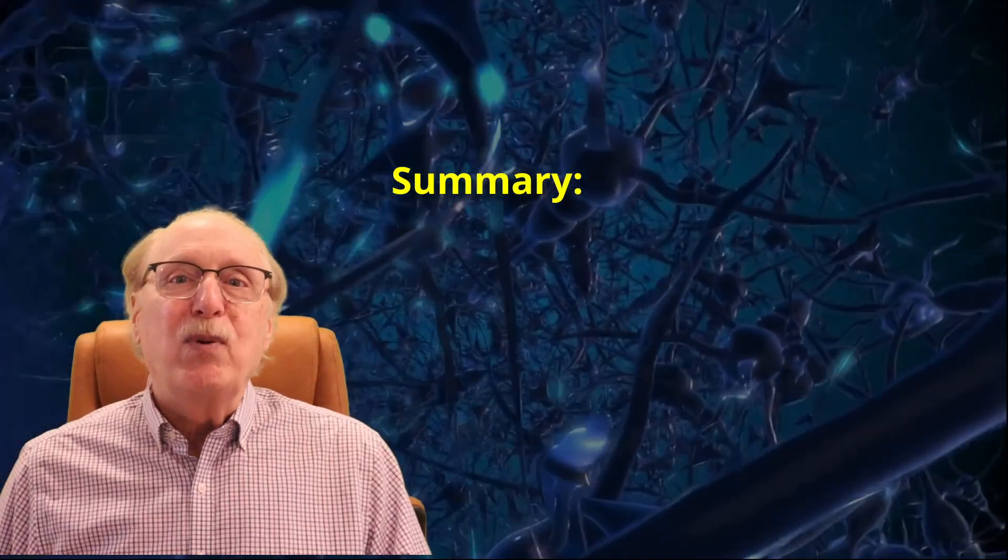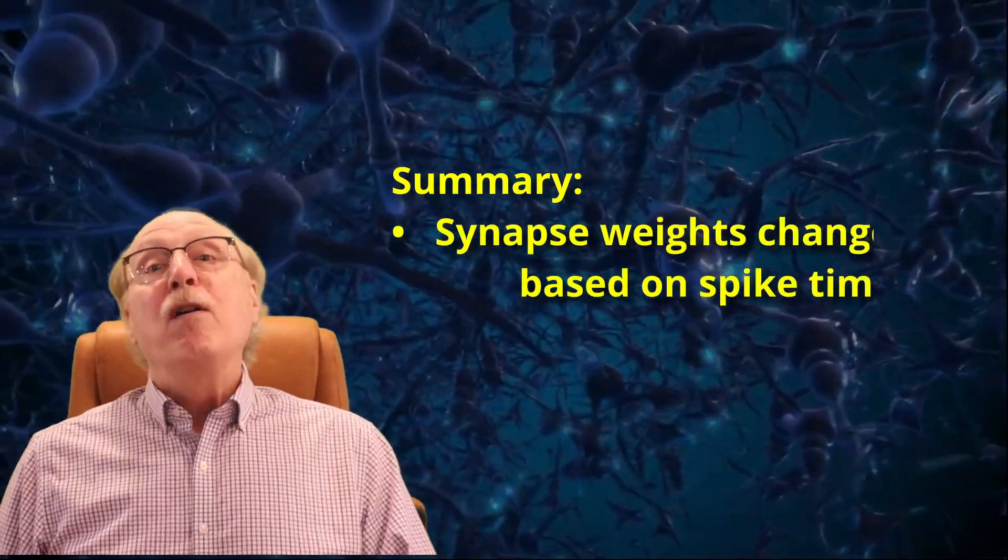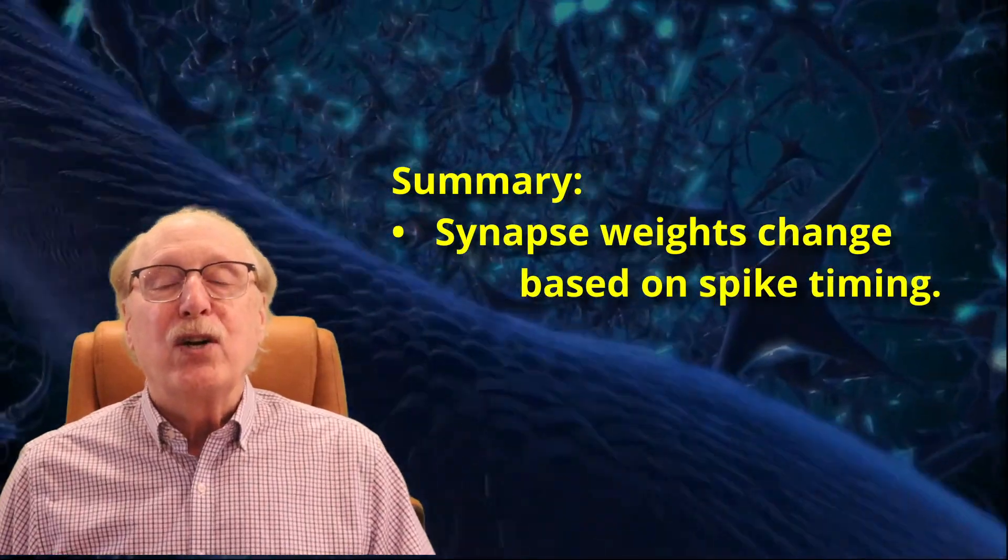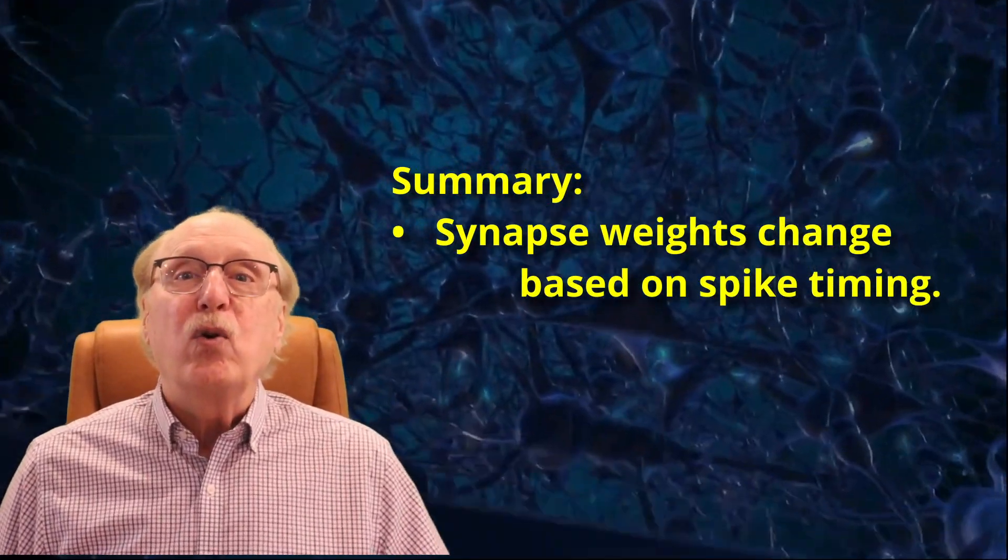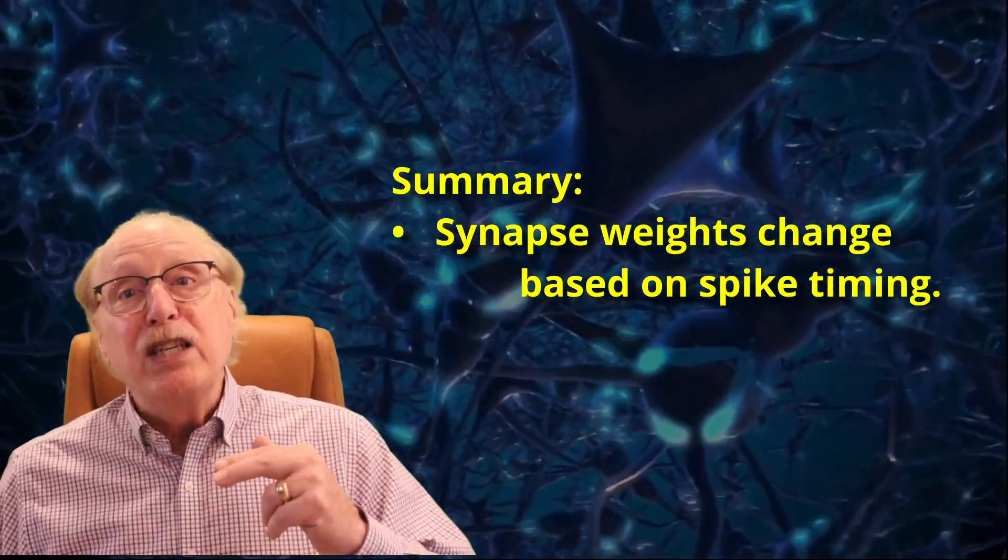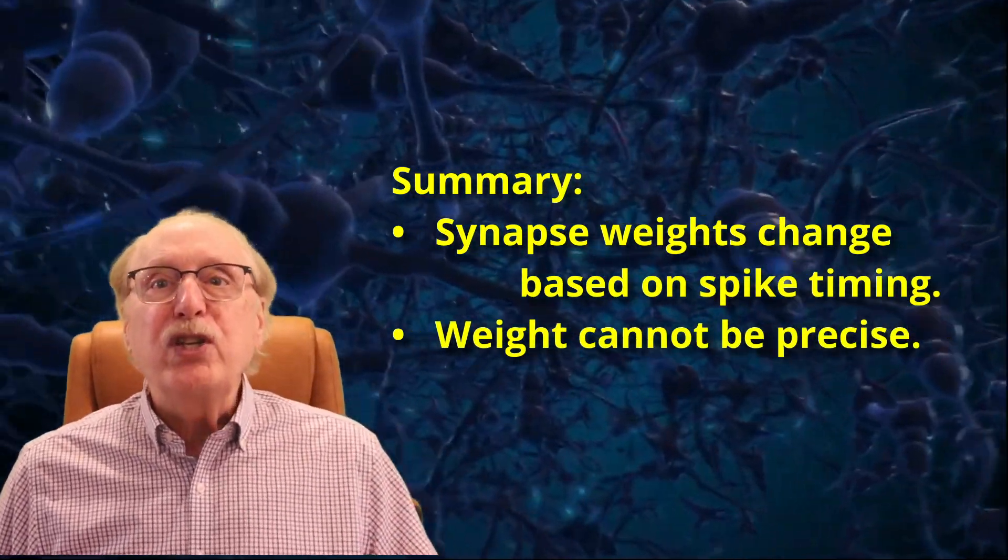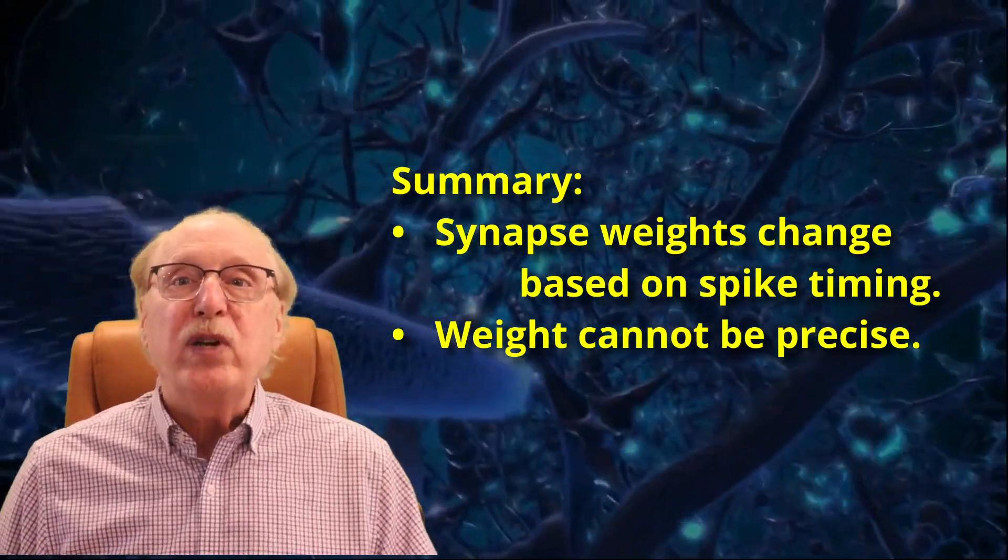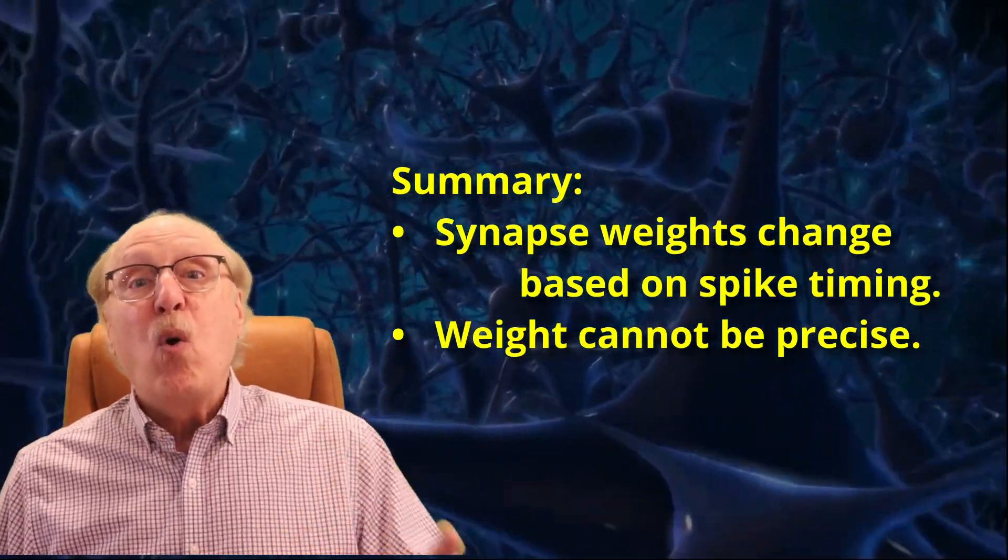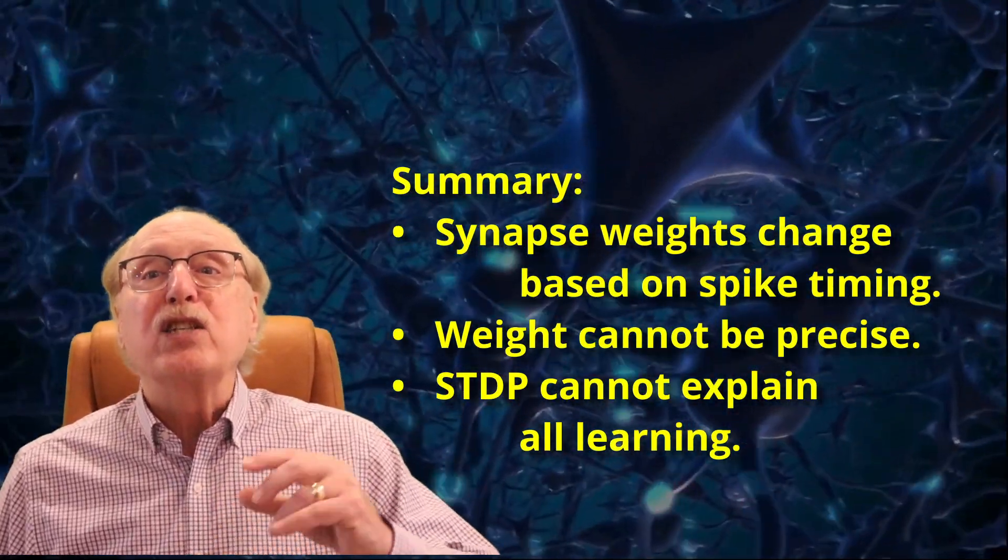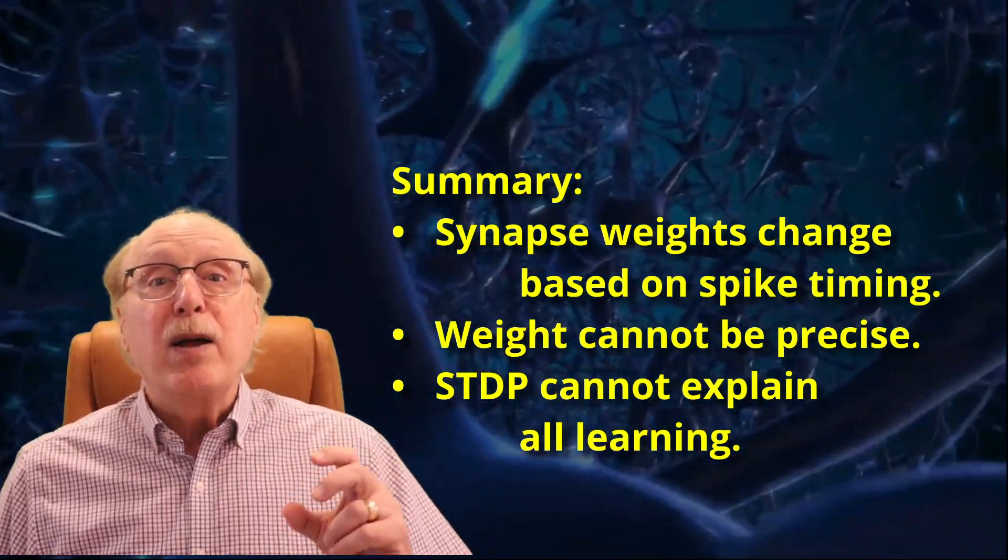In future videos in this series, I'll provide some insight as to how this could work. So let's summarize the key points I've presented about Hebbian learning. For background, synapses interconnecting neurons have a size or a weight which impacts the firing of the target neuron. This weight can be modified according to the Hebbian rule, but that idealized rule isn't as straightforward as it might seem at first glance. Weights cannot be set with precision and synapse weights tend toward the extremes, either at their maximum value or at a value too small to have any influence. Conclusion? Although Hebbian learning explains many things, it cannot be the entire picture.